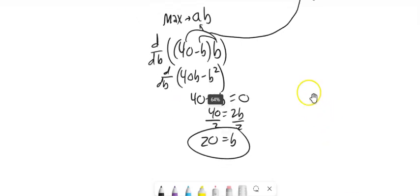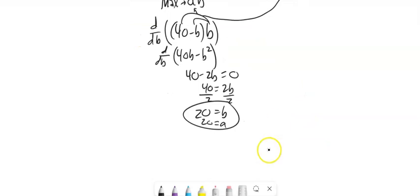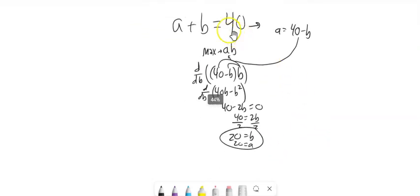B is 20. And when B is 20, I can plug it back into here. That means A is 20. So the pair of numbers that add to 40 that maximizes their product is 20 and 20.